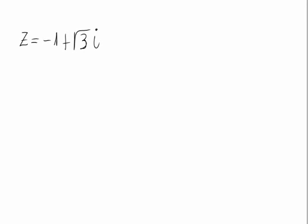Given the complex number z equal to minus 1 plus the square root of 3i, we're asked to calculate the trigonometric form of this complex number, that is the polar form. For that, what we have to do first is calculate the modulus and the argument of this complex number.